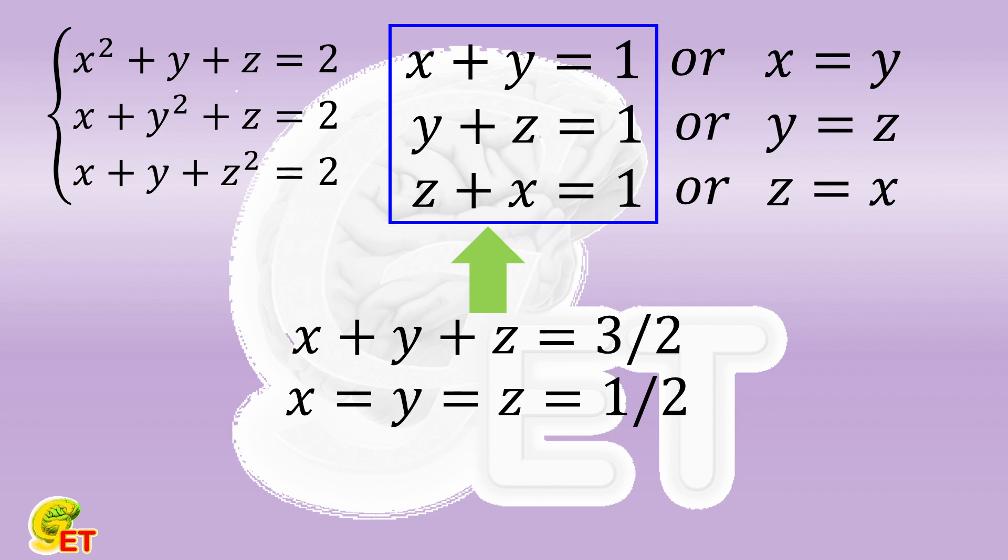In the process of finding x, y, and z, we did not use the original equation, so we need to bring this set of solutions back to the original equations to make a check. It unfortunately turns out that they are not solutions to the original equations. That is to say, in the three groups of conditions, those three on the left side cannot be fulfilled at the same time.